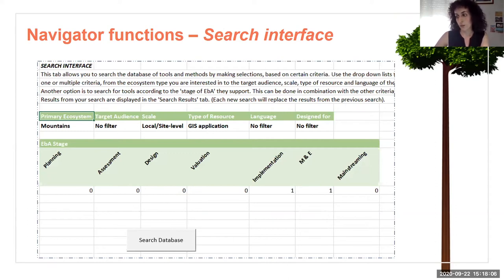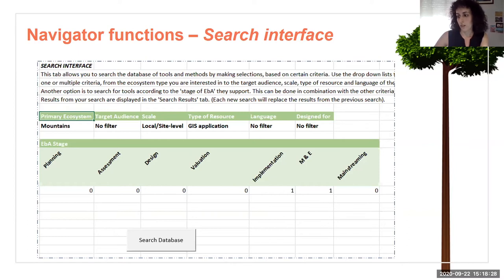The most useful function is its search interface, which allows you to find tools for specific needs by customizing your search according to different criteria. For example, you can search according to the ecosystem you're working on, the scale of implementation, or the stage of EBA you need a tool for — whether it's planning, design, monitoring and evaluation, or mainstreaming. The navigator then creates a customized list of results for you.